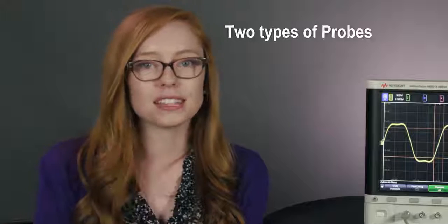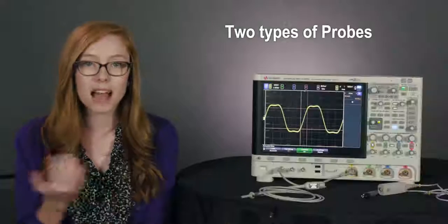But you can think about it like this. There's really just two main types of oscilloscope probes: passive and active. Passive probes are your general purpose probe. They're the most widely used oscilloscope probe. They're economical and rugged and they're typically what you're going to find shipping with your oscilloscope.